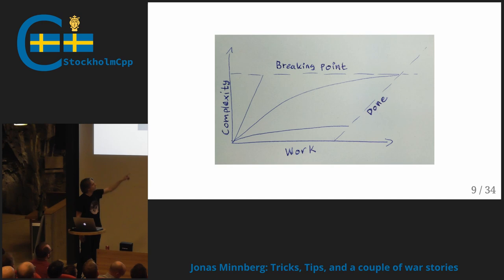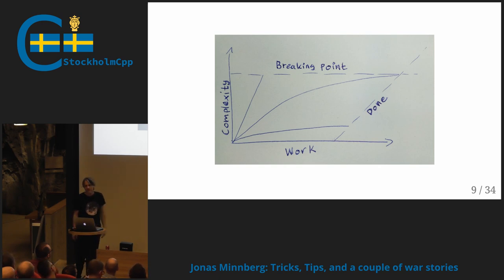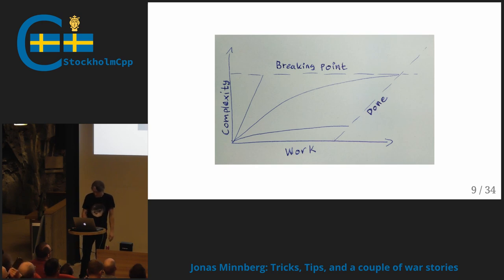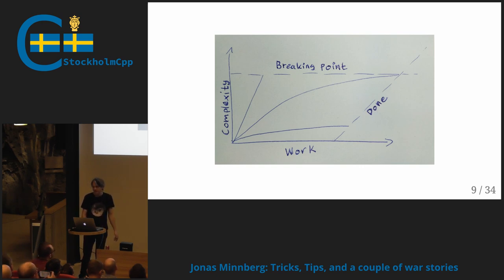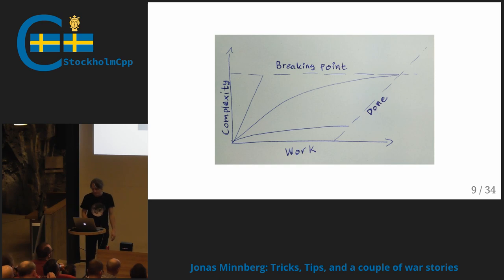The angle of the 'done' line — at first I drew it vertical, but of course the more complex the code is, the more work you have to put in to get there. In reality it's probably even steeper than that. And this breaking point isn't always obvious, especially when you don't really know why things aren't progressing or moving forward. Then you have to think: maybe something needs to be refactored, maybe something's too complex.